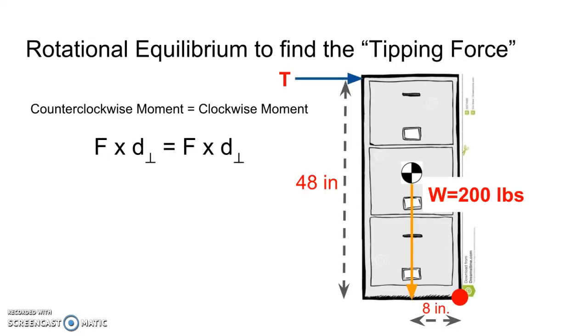Counterclockwise moment is equal to clockwise moment, so force times distance equals force times distance. We have T applied at a distance of 48 inches equals 200 applied at a distance of eight inches. A little bit of math, 200 times eight is 1600. I divide out the 48 and I end up with a force of 33.33 pounds.